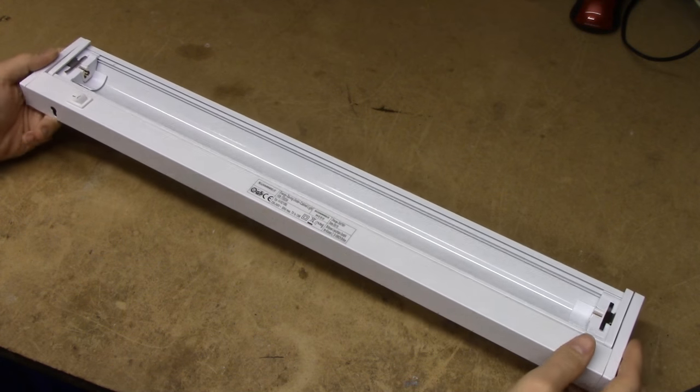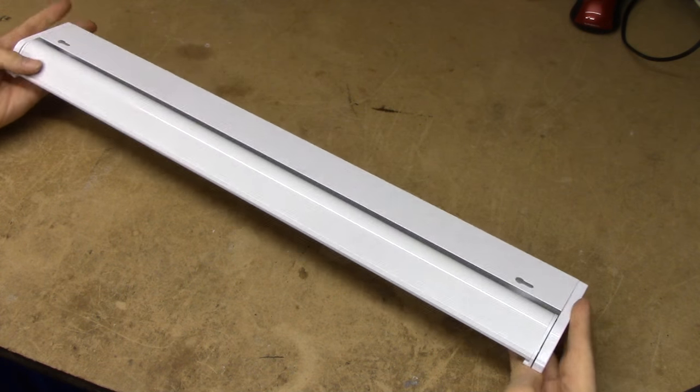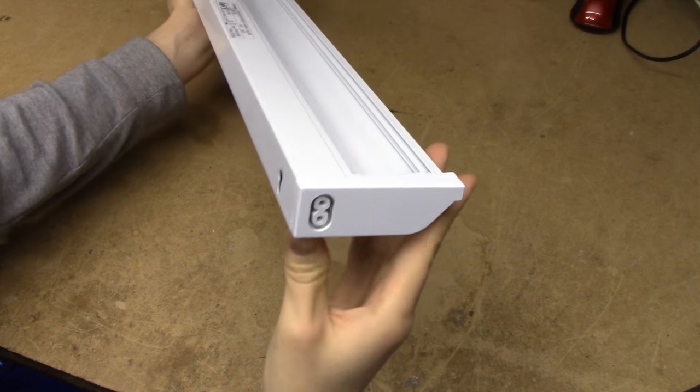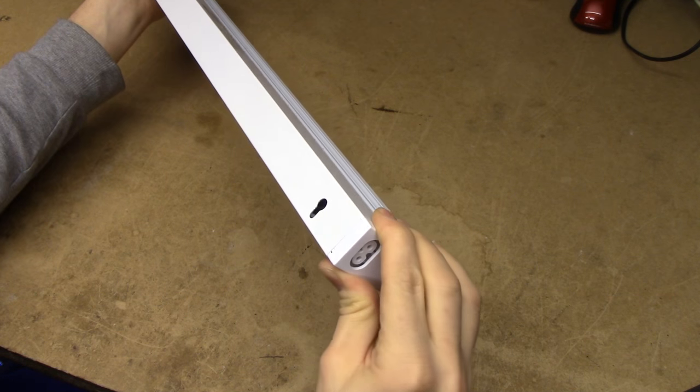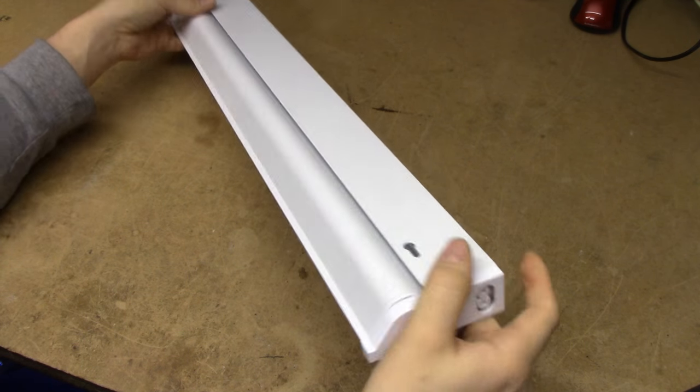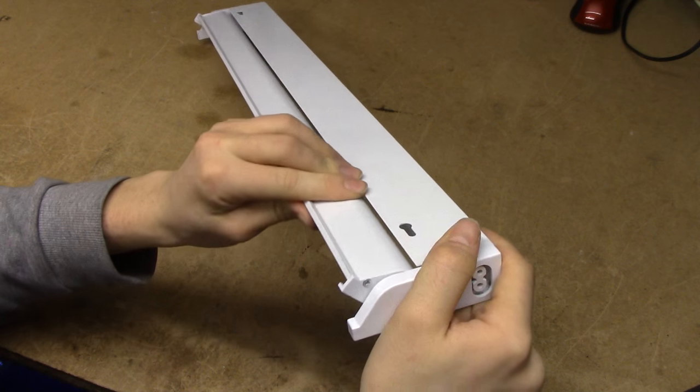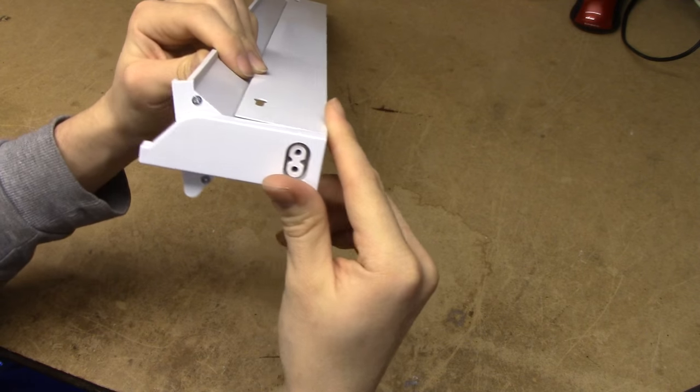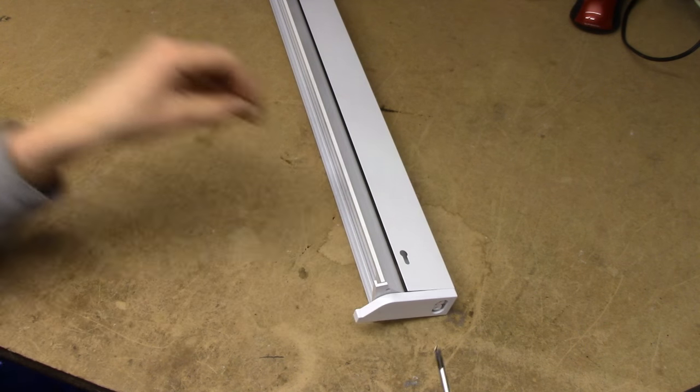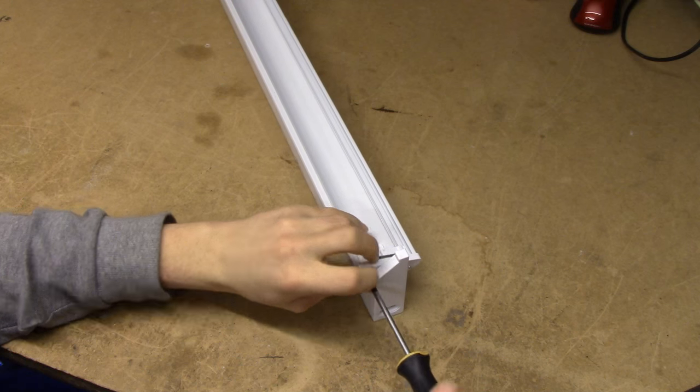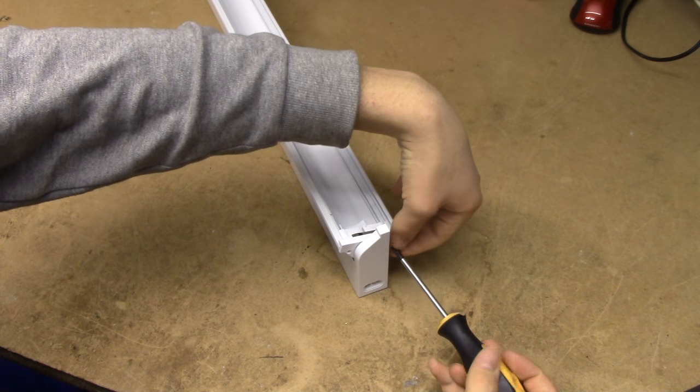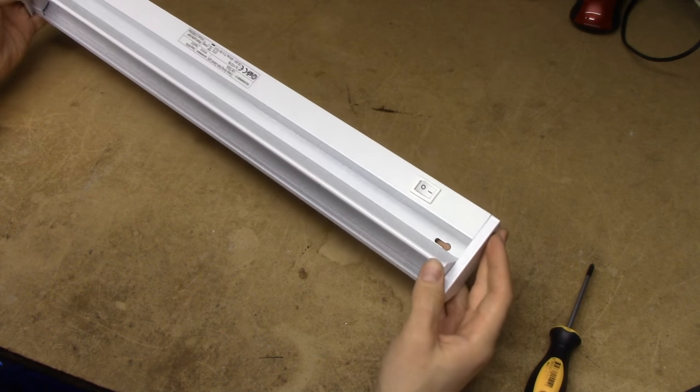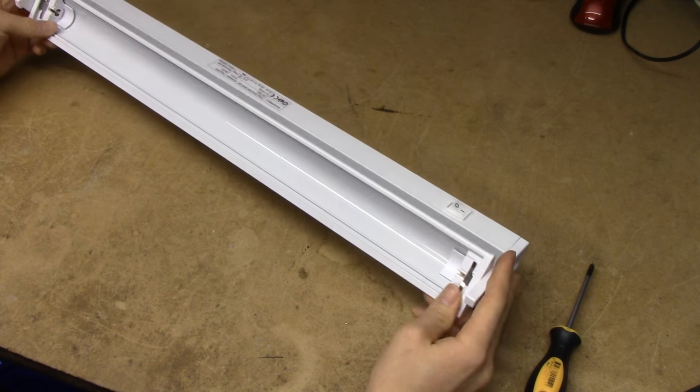Moving on, there isn't any super obvious way of getting these apart. These plastic end caps seem to be just kind of wedged in there, but if you actually flip that edge you do get a couple of screws, so we'll try undoing those.